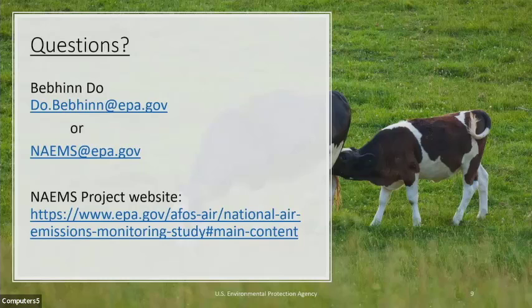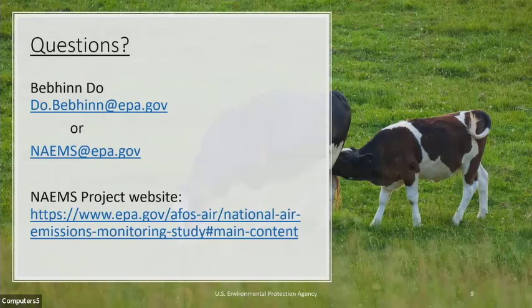My question gets back to the timeline and process for putting these models into place, and really the discussion on how the models don't have a capability to address best management practices or controls that might adjust emissions. If the point of this is to show compliance with permitting, regulatory, or administrative consent order requirements, it seems like best management practices or some kind of controls would be a really crucial part of these models. Why is that not included or not able to be included, and why does that need to be a local discussion with the permitting authority that may not have the background and depth of expertise that EPA and Purdue University have put into developing these models?